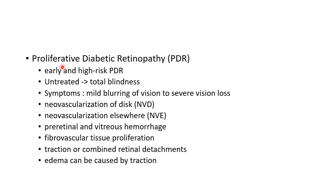Now let us see about the features of proliferative diabetic retinopathy, or PDR. It is divided into early and high-risk PDR. If untreated, it can lead to total blindness. Symptoms can range from mild blurring of vision to severe vision loss. Features include neovascularization of the disc (NVD), neovascularization elsewhere (NVE), pre-retinal and vitreous hemorrhage, fibrovascular tissue proliferation, and traction or combined retinal detachments. Edema can also be caused by traction.